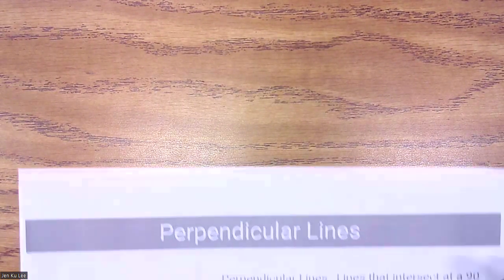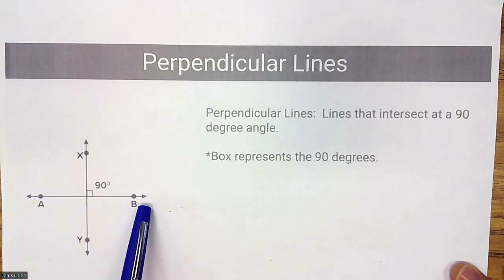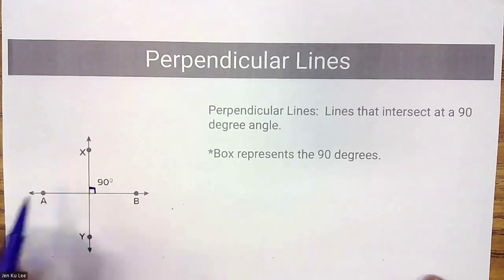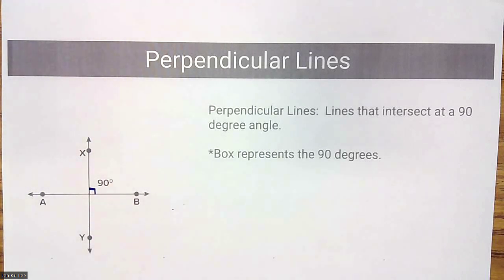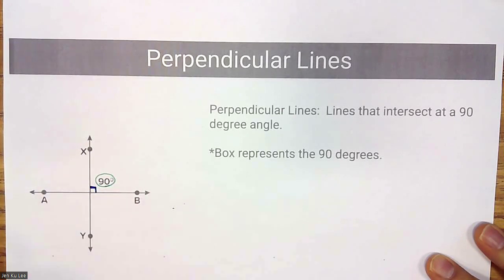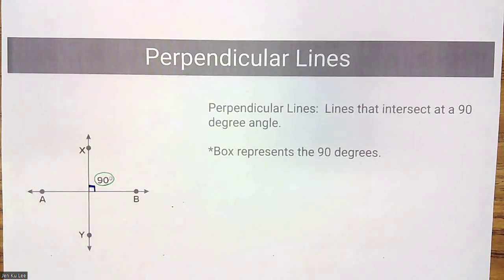The first vocabulary word is perpendicular lines. Perpendicular lines are lines that intersect at a 90-degree angle. What you have to know is this box symbol — that box signifies that those lines are perpendicular. Whenever you see that box on two lines, that means they are perpendicular. Just like a square or rectangle has 90-degree corners, perpendicular lines intersect at a 90-degree angle.